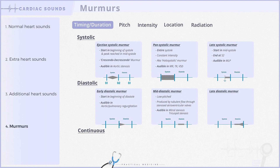The last subcategory of diastolic murmur is the late diastolic murmur, more famously known as presystolic accentuation. This murmur is also featured in mitral or tricuspid stenosis. It occurs during the last one-third of diastole, when the atria contract and push blood forcefully through a stenotic mitral or tricuspid valve. This accentuation is lost in atrial fibrillation due to ineffective atrial contraction.